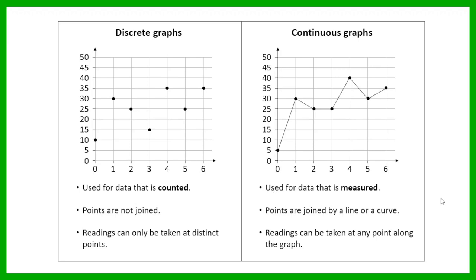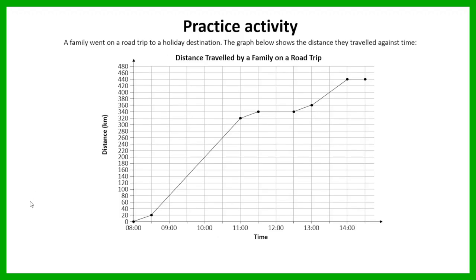Now let's have a look at an example where we're going to actually be interpreting a graph. In this example, we've got a graph that represents the distance traveled by a family as they go on a road trip to a holiday destination. On the horizontal axis we've got the time — that is our independent variable — and on the vertical axis is the distance they are covering, measured in kilometers — our dependent variable. You're going to answer some questions based on this graph.